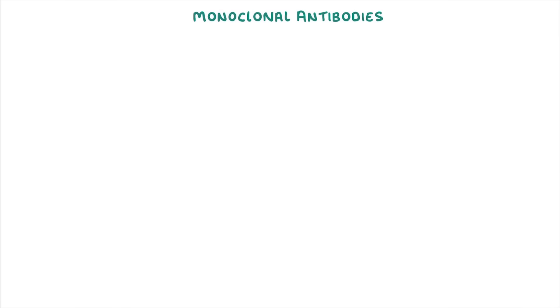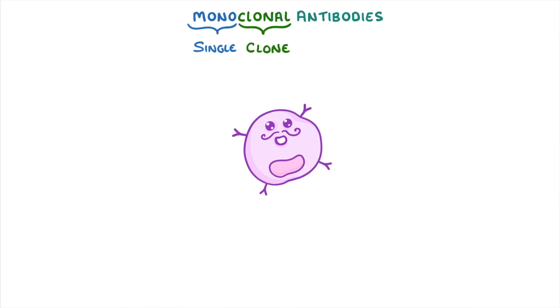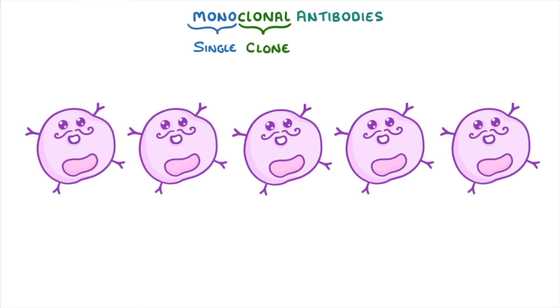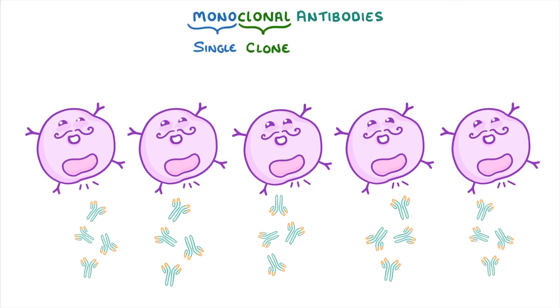Today's video is all about monoclonal antibodies. If we look at the term monoclonal antibodies, it really means antibodies from a single clone of cells. So basically we take a cell, clone it a whole bunch of times, and then make all the clones produce antibodies, which we can then isolate and call monoclonal antibodies.